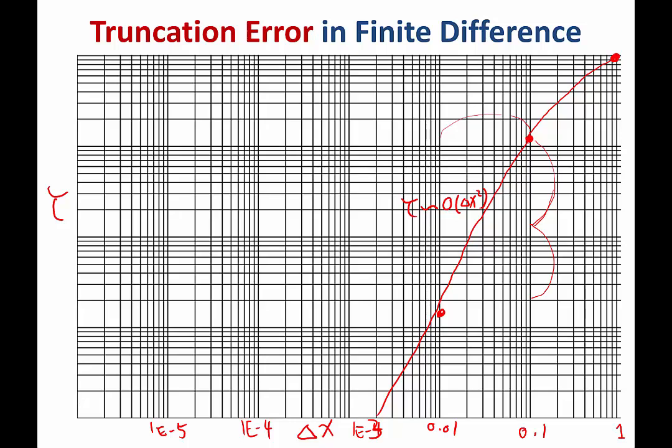If, for example, you know your scheme is second-order and your solution is second-order. Then, as you refine the grid, as you increase the n, decrease the delta x, you should find your solution error to decay in that rate.